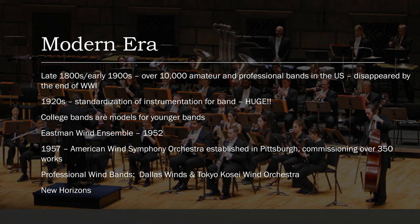Moving into the modern era — the late 1800s to early 1900s — there were over 10,000 amateur and professional bands in the United States. But a lot of those disappeared by the end of World War I. This was also a time when there was a struggle over what really is the instrumentation for the band. In the 1920s, instrumentation for the band was standardized, which was huge because it meant people could actually start writing music for band that would be good for more than just one person's band.